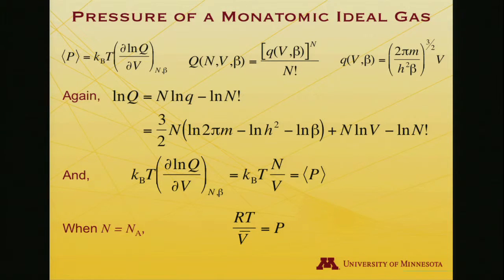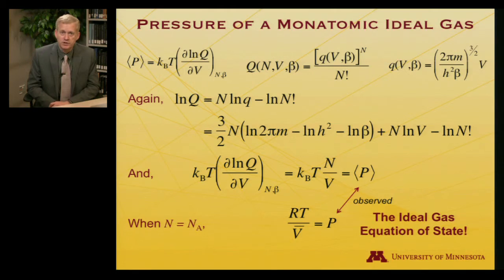If N is Avogadro's number, if I'm using a mole of particles, then N over V becomes the molar volume. Avogadro's number times Boltzmann constant is the universal gas constant. So I get R, and I have P equals RT over molar volume. I've just dropped my expectation value brackets to imply observation. The observed pressure is equal to RT divided by molar volume. That's the ideal gas equation of state. We've actually derived the ideal gas equation of state from thermodynamic relationships of pressure, energy, volume, and partition function. A tremendously powerful result.